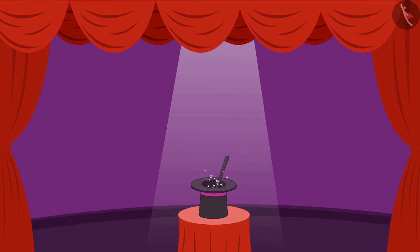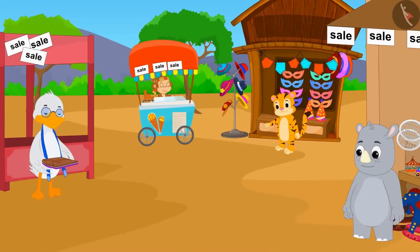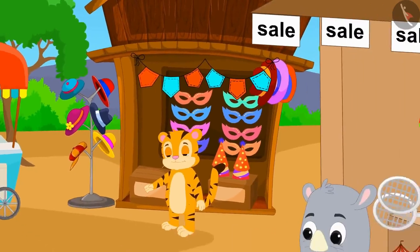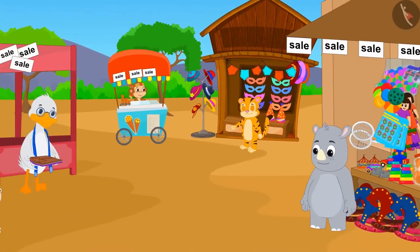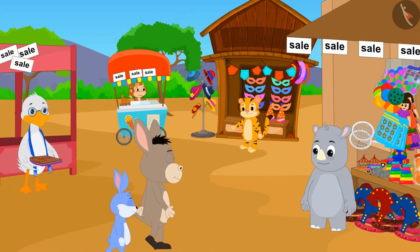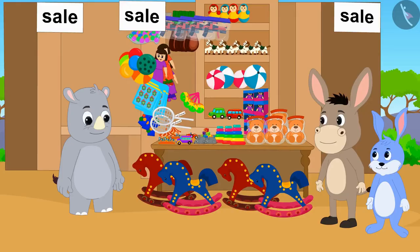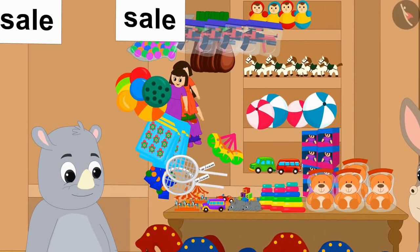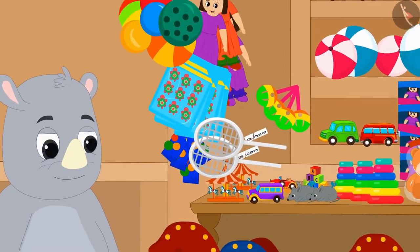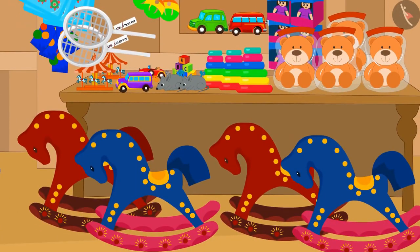Hello children, in this video we will learn about what is hundredth. There is a sale going on in several places in the Champapur market. Bunny and Bhoala have come to the market to shop. First, they have come to Gaggoo's shop to buy toys. There is a huge discount on toys at Gaggoo's shop in the sale.